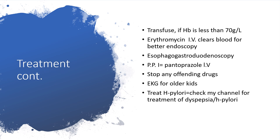Transfuse if hemoglobin is less than 70 grams per liter. You can use erythromycin intravenously to clear the stomach before you embark on endoscopy to get a better picture. And after that, you can embark on EGD. You can use a proton pump inhibitor — for example, pantoprazole intravenously — and stop any offending drug. For older kids, you can use EGD. And if you have detected H. pylori, you can treat appropriately using triple regimen or quadruple regimen — you might use amoxicillin and clarithromycin with a proton pump inhibitor like omeprazole, or you may use quadruple therapy.